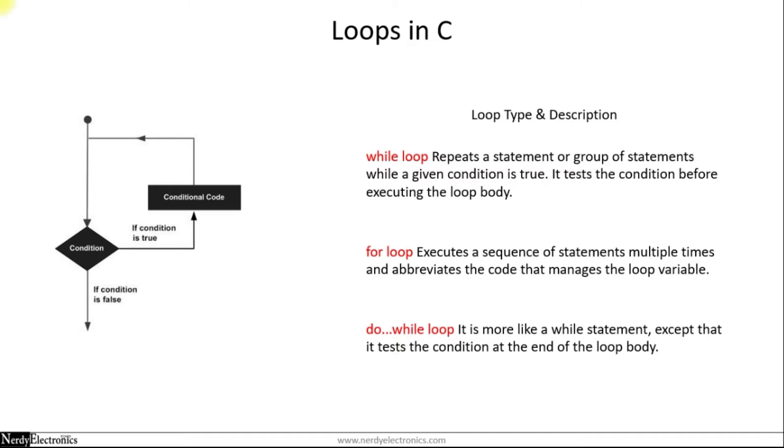The do while loop is primarily similar to while loop with one difference. In while loop, the condition is checked before the execution of the statements, whereas in do while loop, the statements are first executed and then the condition is checked. So in do while loop, at least once the execution of the statements happens.